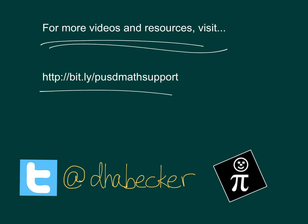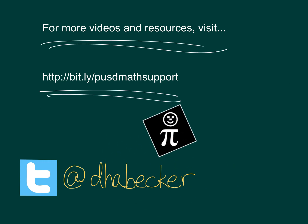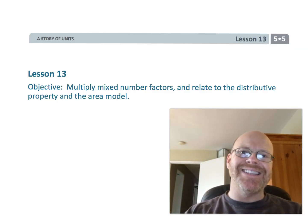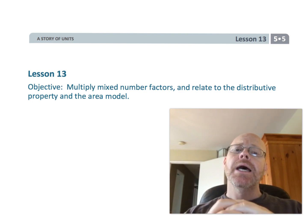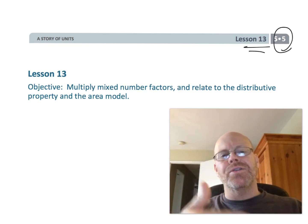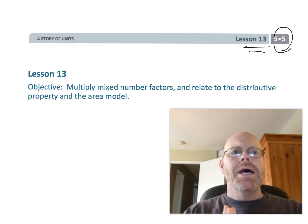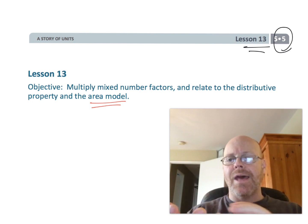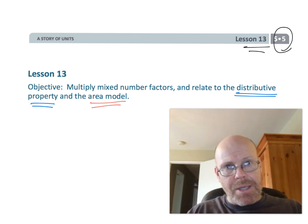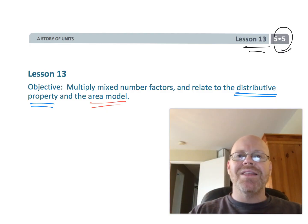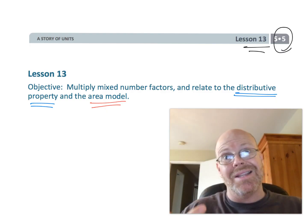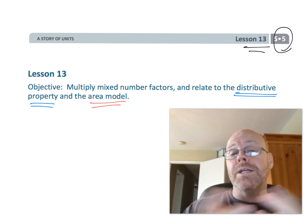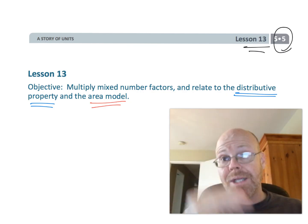This is fifth grade module 5 lesson 13. In this lesson, students are going to be continuing to use the area model to understand multiplying fractions, but this time we're really going to get into the standard algorithm where we take mixed numbers and change them into improper fractions. We're going to do it in a logical way that hopefully makes sense to students.